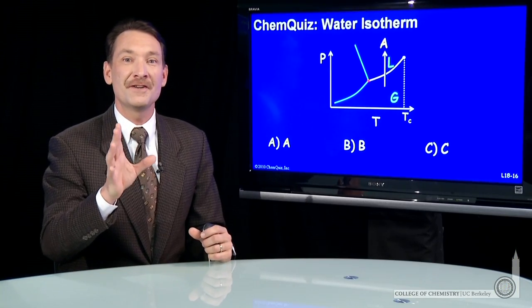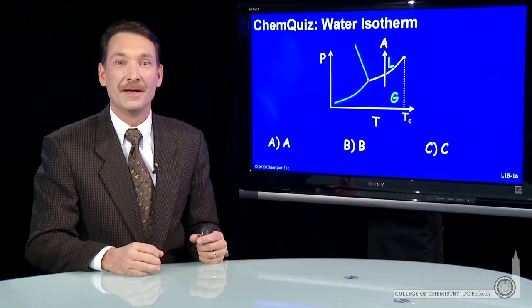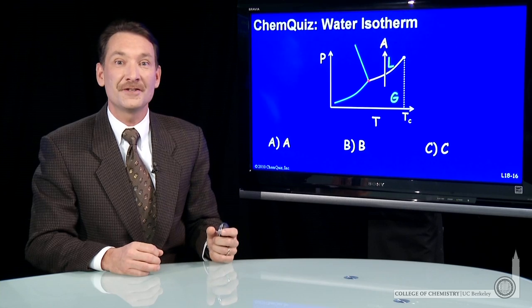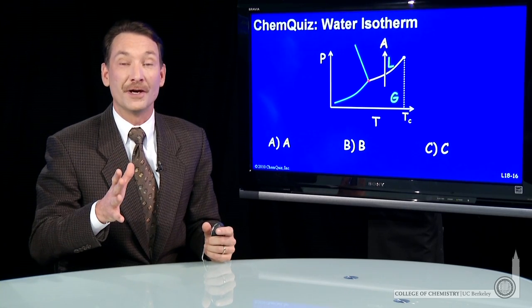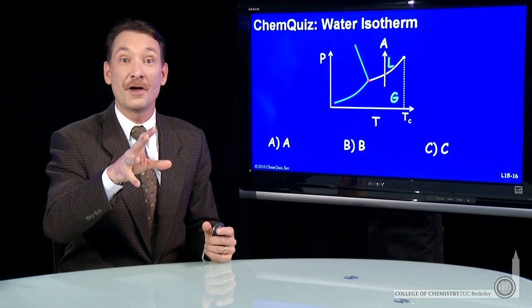We're trying to position the 373-Kelvin isotherm on the phase diagram for water. Now, the 373 isotherm is 100 degrees Celsius, so that's the normal boiling point. The normal boiling point is the transition between the liquid and the gas water.